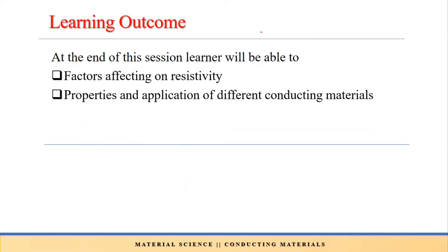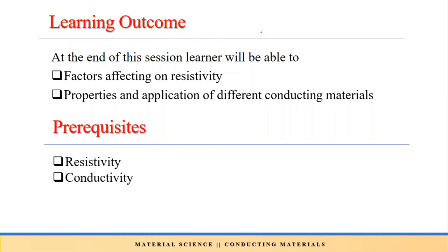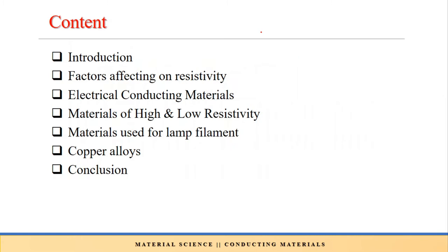Learning outcome. So at the end of the session, the learner will be able to find out the factors affecting on resistivity and also properties and applications of different conducting materials. Prerequisites for the session are resistivity and conductivity. The content for today's lecture includes introduction, factors affecting on resistivity, electrical conducting materials, materials of high and low resistivity, materials used for lamp filament, copper alloys, and conclusion.